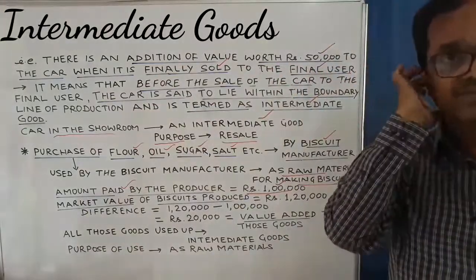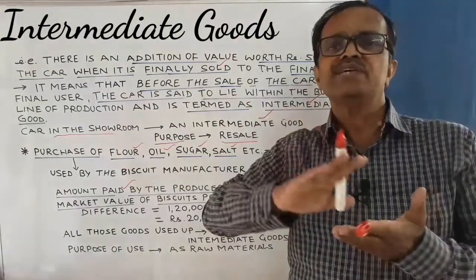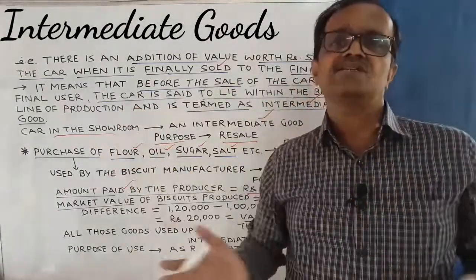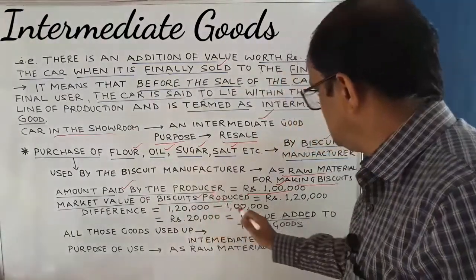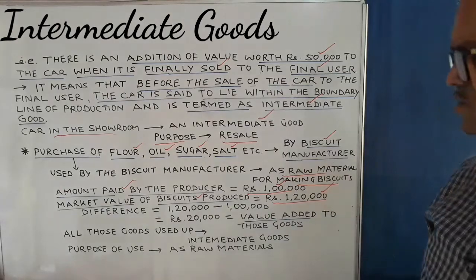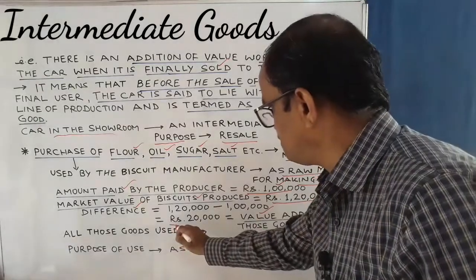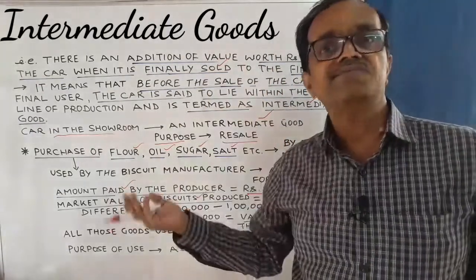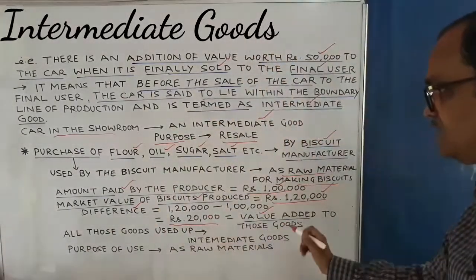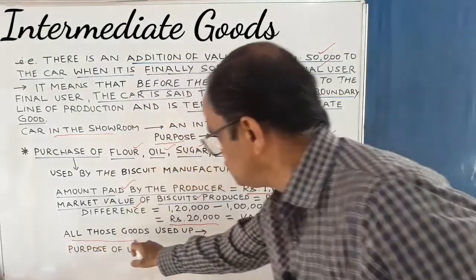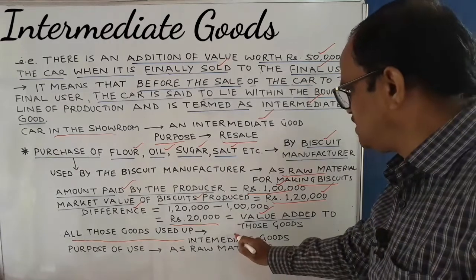When these goods are completely transformed into biscuits, the market value of those biscuits is 1 lakh 20,000 rupees. The difference — which is the value added — is worth Rs. 20,000. The market value is 1 lakh 20,000 and the purchasing value is 1 lakh, so the difference of 20,000 is the value added. Thus, all those goods used up during the production of biscuits are simply called intermediate goods.